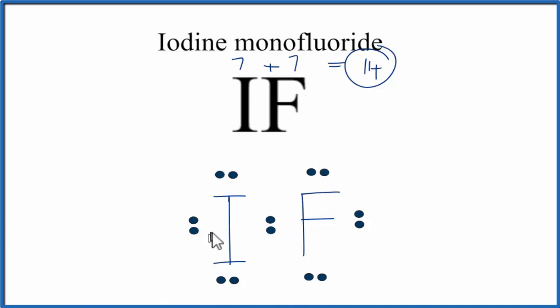The iodine here has 8 valence electrons, it has an octet. The fluorine has 8 valence electrons as well. So that has an octet, we're done.